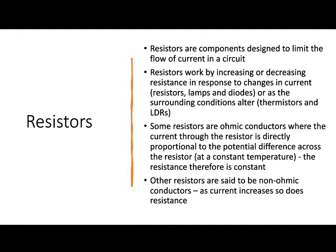We'll come on to those in more detail in future lessons. So some resistors are what we call ohmic conductors — O-H-M-I-C. We know the term ohms already as the unit for resistance. Ohmic conductors mean that the current through the resistor is directly proportional to the potential difference across the resistor, at a constant temperature. So the resistance is constant through that component.